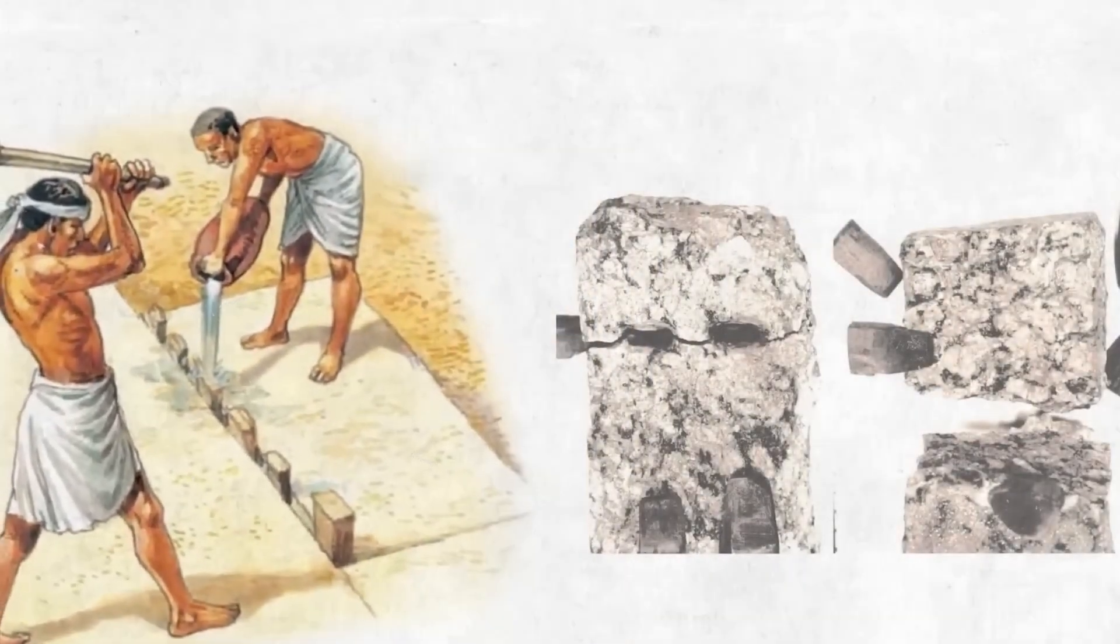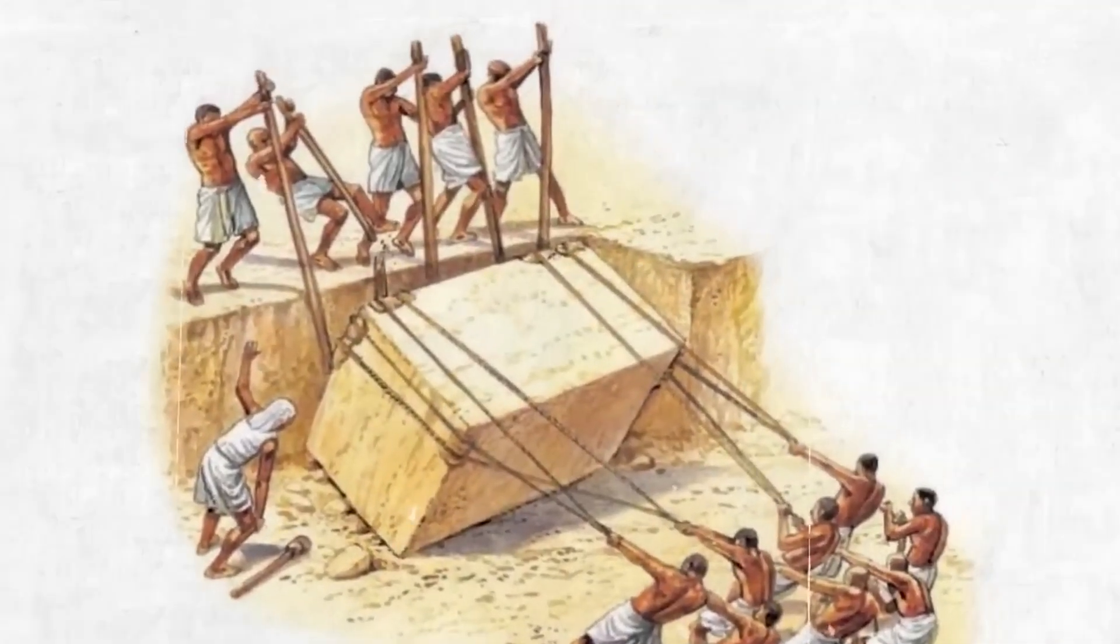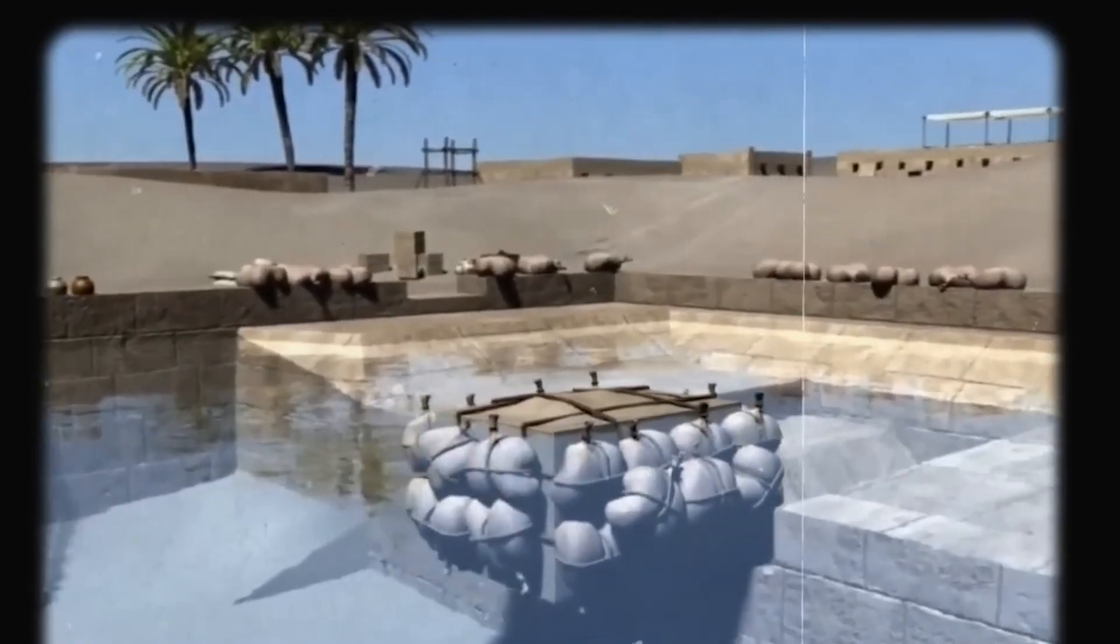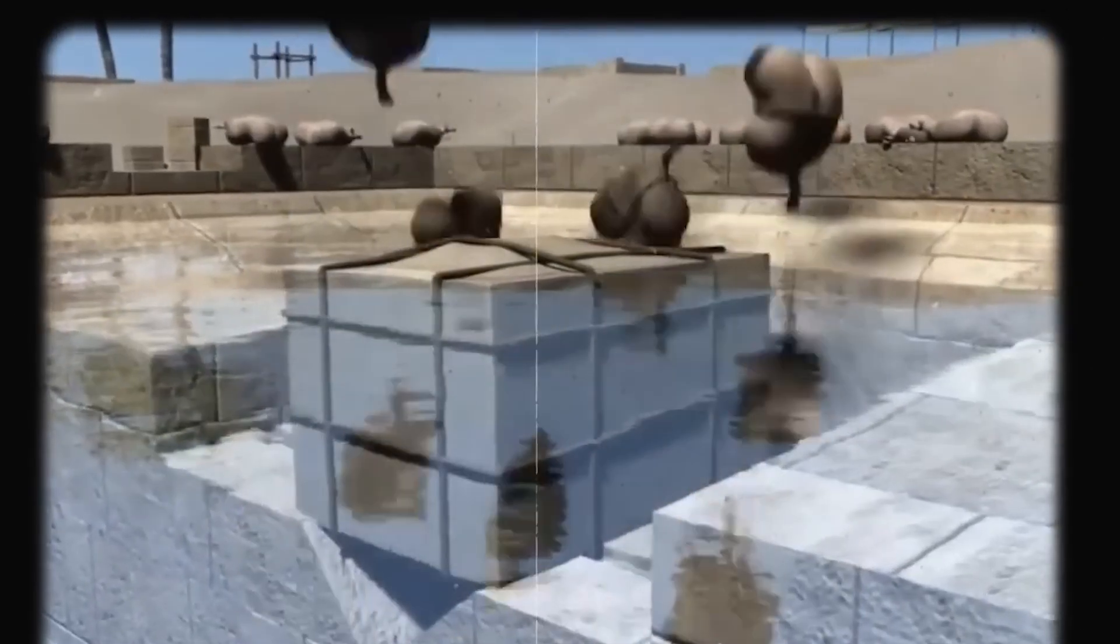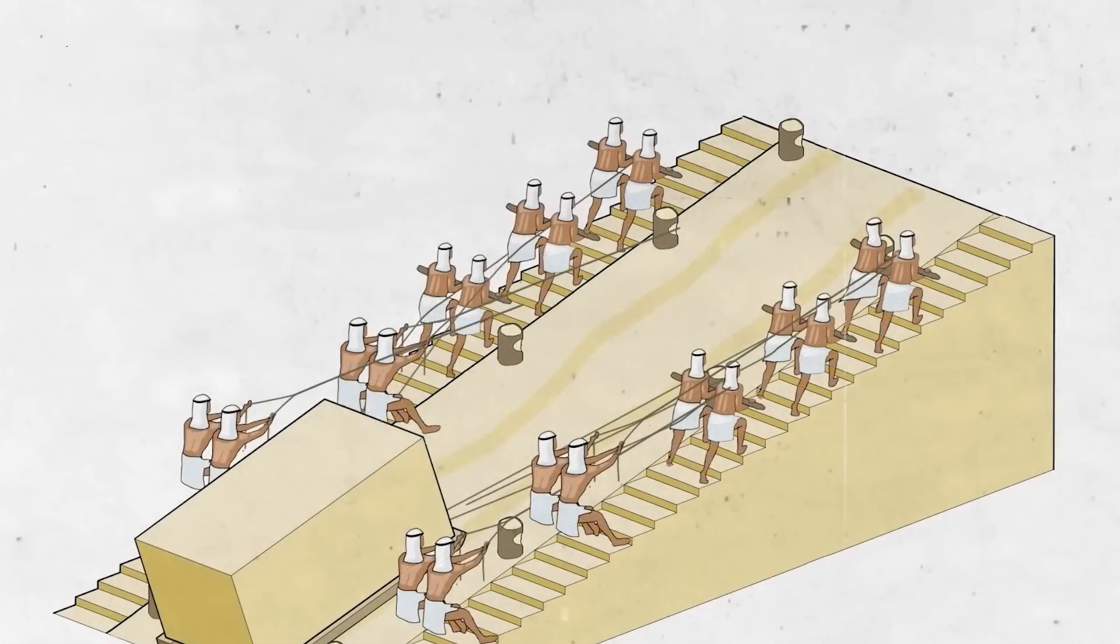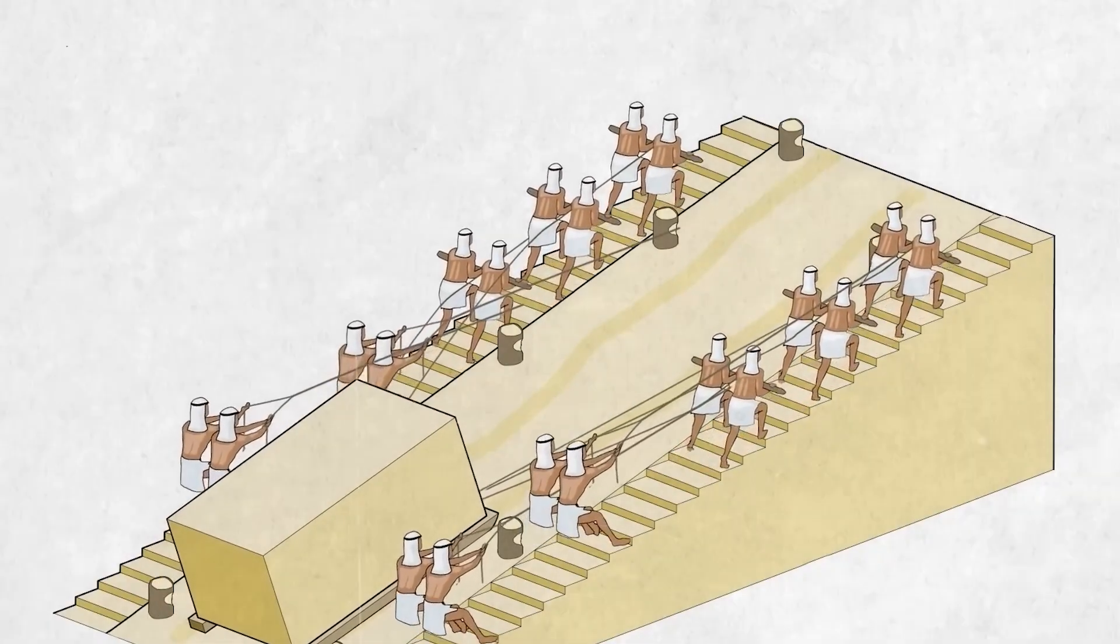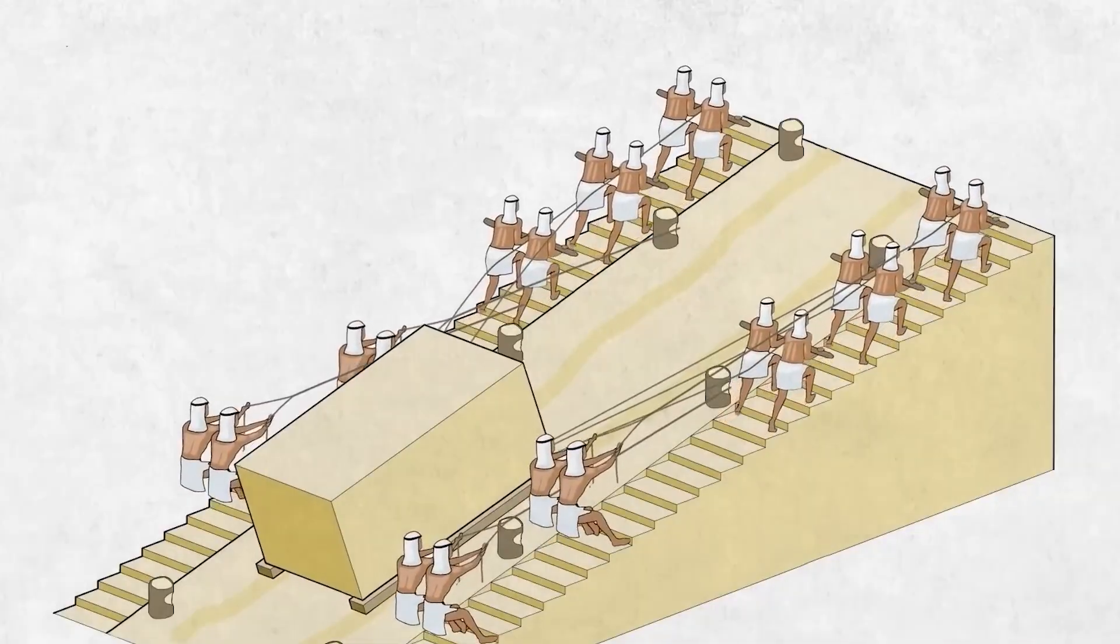Another interesting discovery relates to how the sleds were moved. Scientists studying wall paintings noticed workers pouring water in front of the sleds. This wasn't just to cool the sand. It was a way to reduce friction. Wetting the sand made it firmer, which helped prevent the sleds from sinking. This small trick could have made it much easier to drag heavy stones over long distances.